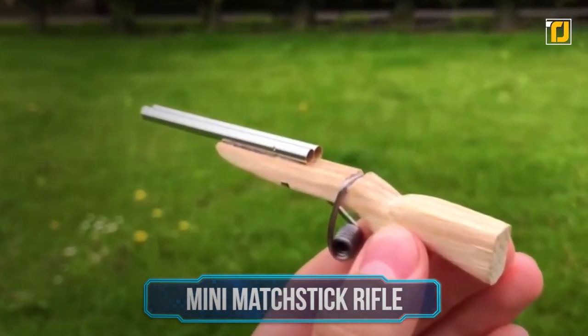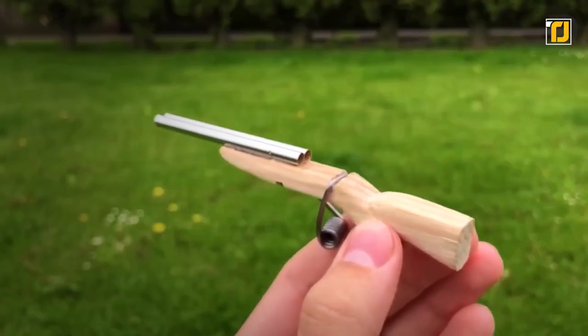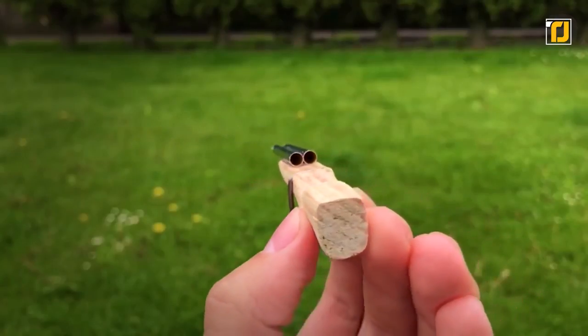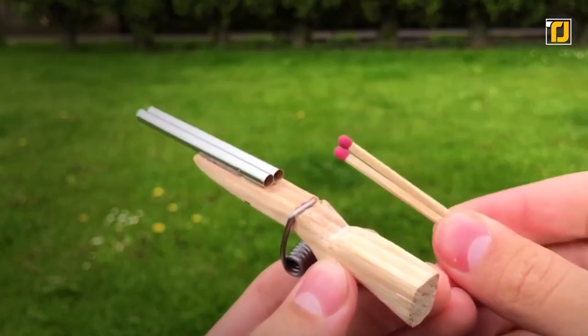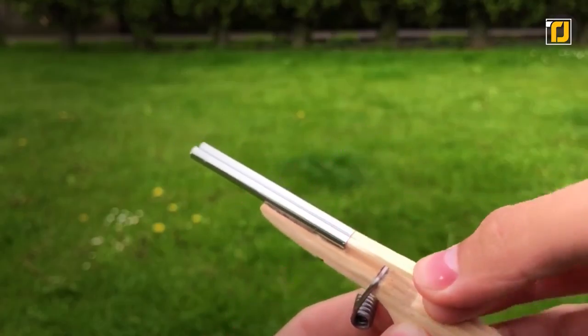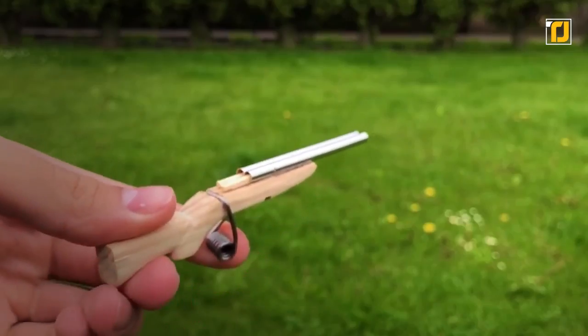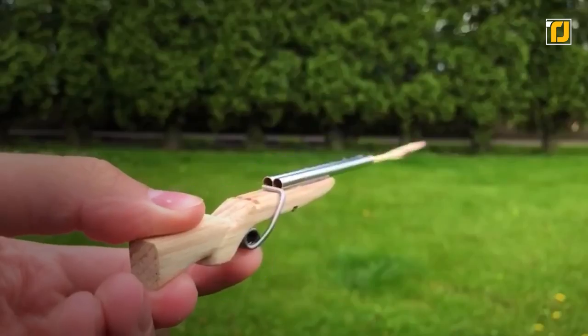Number 1. Mini Matchstick Rifle. Here's a rifle fit for our favorite miniature cowboy Jedediah from the Night at the Museum movie series. This matchstick rifle may be small, but it packs quite a piercing punch, just like Jedediah. Don't believe us? Just look at how the pressure of the matchstick pierces through the red apple's armor in a matter of seconds.